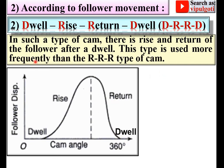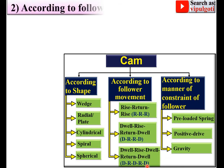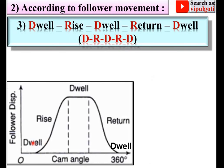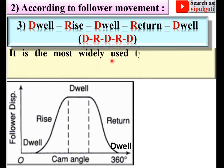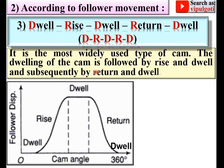This DRRD type is used more frequently than the RRR type. Next, the third type is DRDRD — Dwell-Rise-Dwell-Return-Dwell. It is the most widely used type of cam. The dwelling of the cam is followed by rise and dwell, and subsequently by return and dwell.